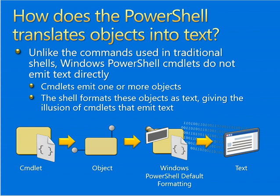How does PowerShell translate objects into text? Unlike commands used in traditional shells, Windows PowerShell commands do not emit text directly. Commands emit one or more objects; the shell formats these objects as text, giving the illusion that the command emits text. You can see the flow: command, object, Windows shell, then text. There are three possible scenarios here.